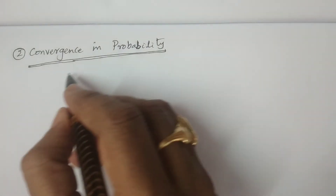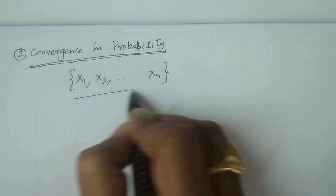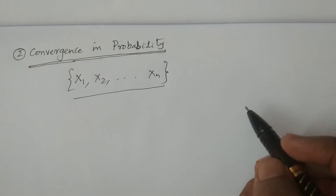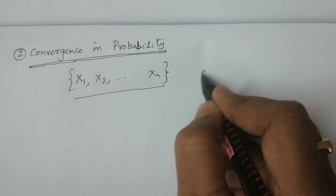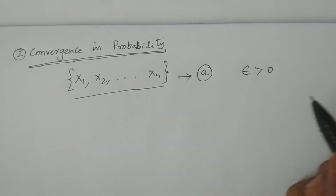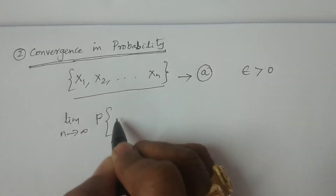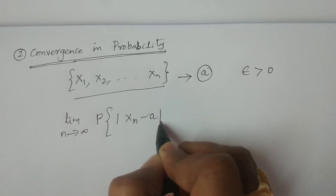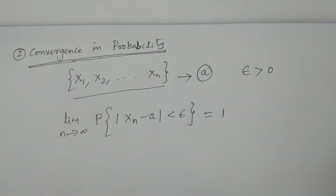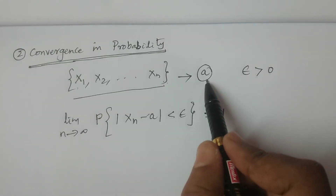Here also you consider a sequence of random variables x1, x2, and so on xn. This sequence is said to converge in probability to a constant A, for any epsilon greater than 0, if: limit as n tends to infinity of the probability that the modulus of xn minus A is less than epsilon equals 1. Then we say the sequence of random variables x1, x2, and so on xn converges in probability to the constant A.